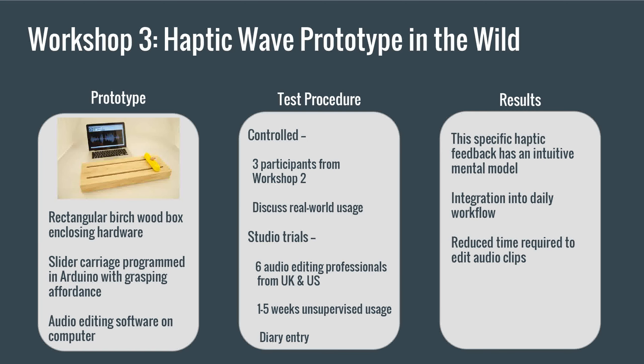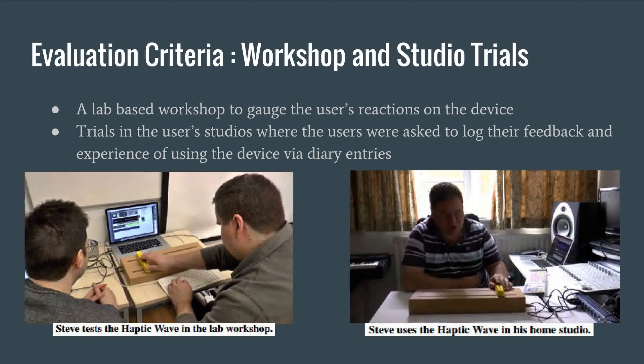A fully functional prototype made of wood was created based on feedback from the second workshop. Evaluation of the prototype took place in two phases: one, a lab-based workshop, and two, studio trials. In the studio trials, participants used the device in their respective studios. Evaluation of the experiments was made by gauging users' reactions in real-world usage scenarios and from diary entries made in the studio trials.